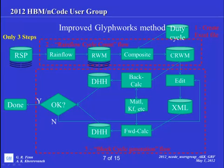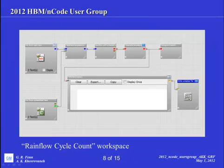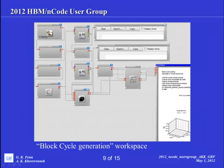With Kurt's help, we created a couple of workflows in nCode GlyphWorks — two workspaces. Ahead of time, you have to set up a duty cycle in an Excel file. We read that in, do the rainflow counting, take that result for the composite rainflow, and feed it through the block cycle generation — and out pops a little report and you're done. It works pretty well. In the workspace, you come in with the rainflow input and your duty cycle, feed through with a few traps to capture it, and that writes out your rainflow cycle count. You can rainflow count for multiple channels on that first one, but you can only process one channel in the second workflow. Feed through it and you get the report.